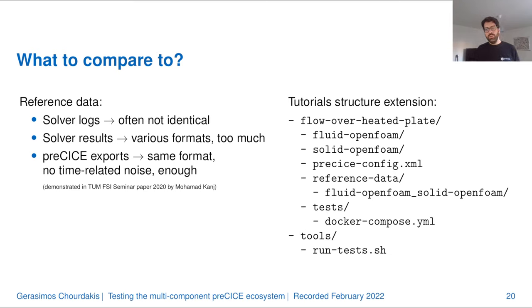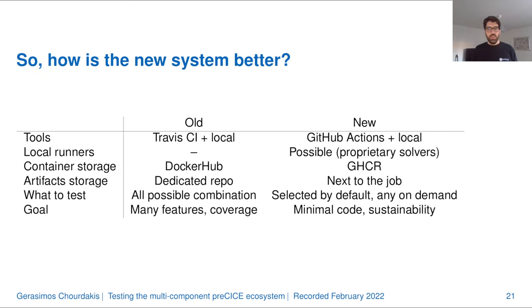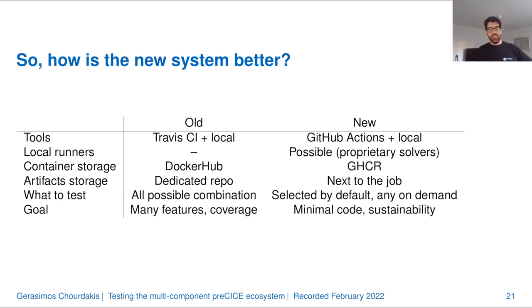We need to store these reference results somewhere — and this is interesting for you because you would be able to see these exports, this reference data, directly with the tutorial. This means you could see the results before even running the tutorial, and compare your case to other cases without needing to run them first, validating your runs against a citable reference. We would also include a Docker Compose configuration file in each test, triggered by a script you can run either locally or in your GitHub Actions workflow.